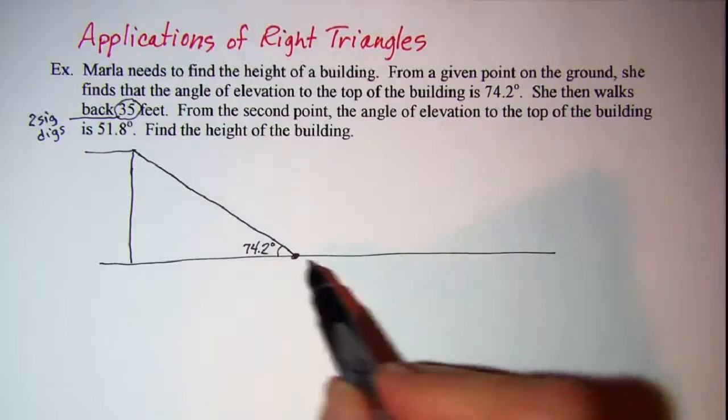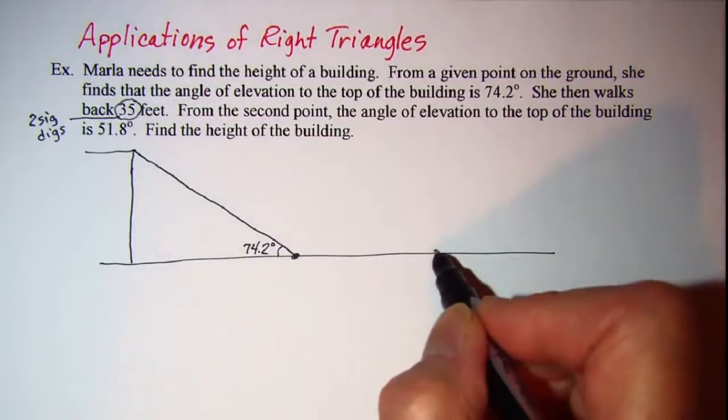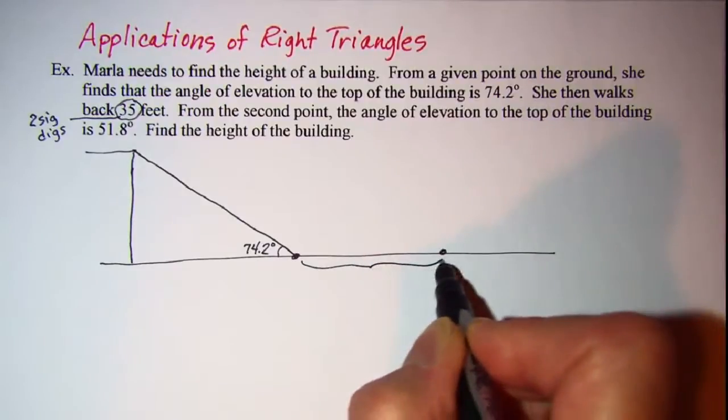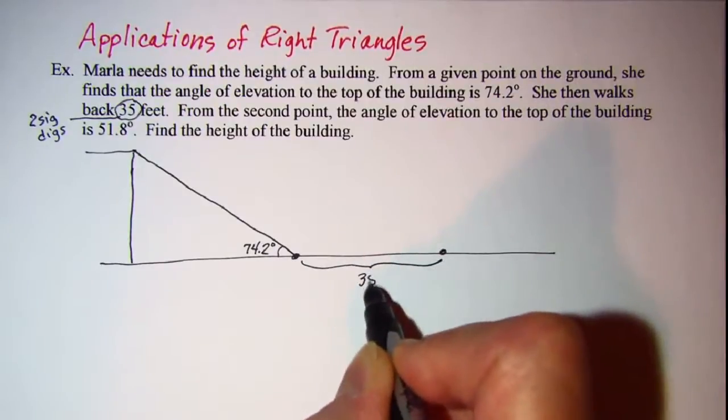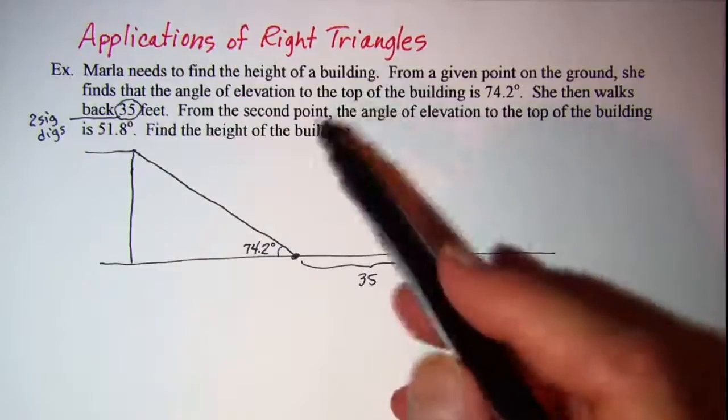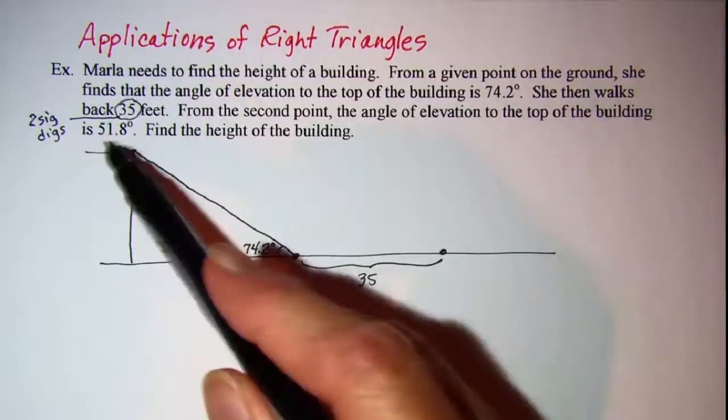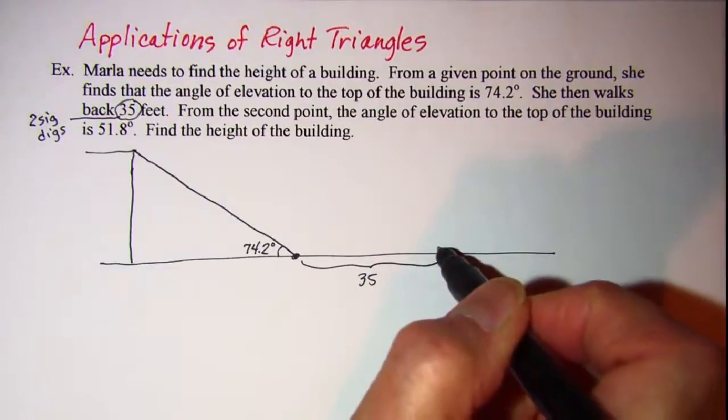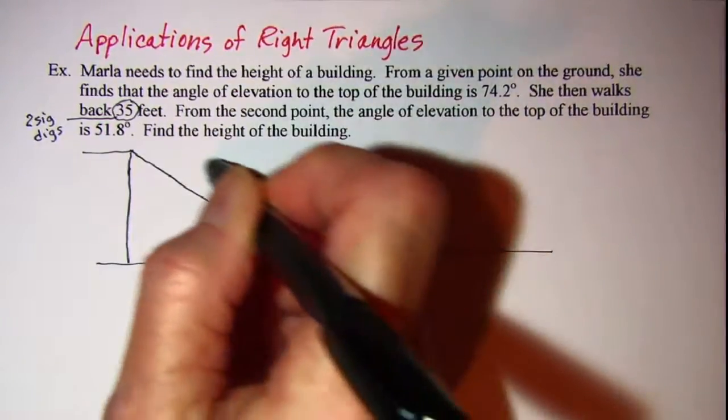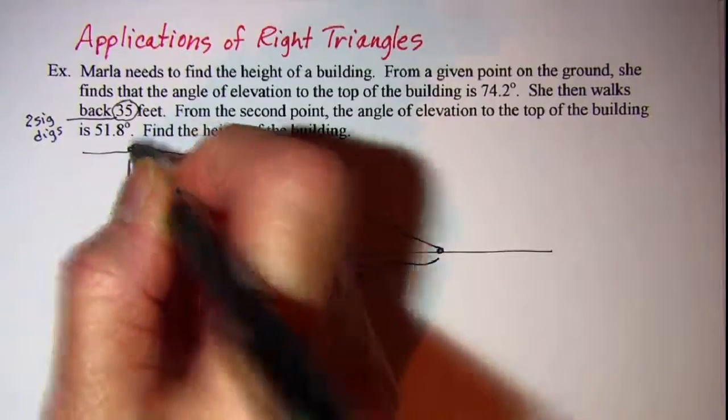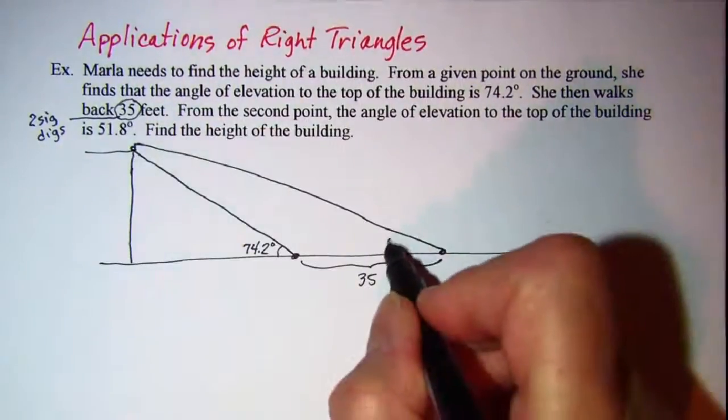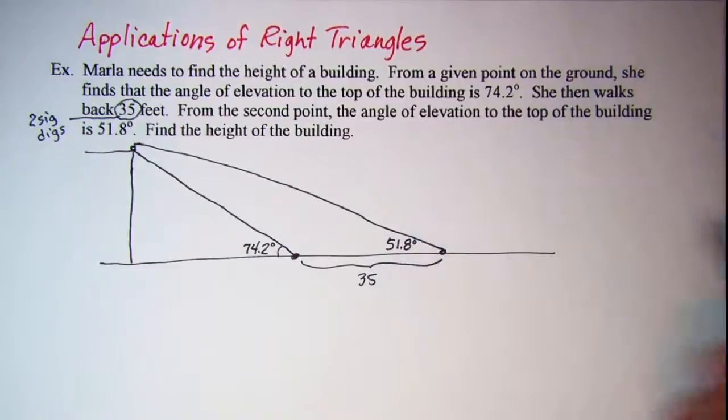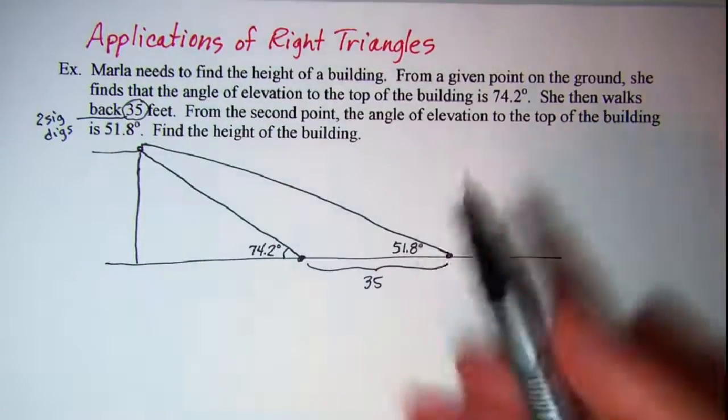She then walks back 35 feet and from the second point, the angle of elevation to the top of the building is 51.8 degrees. Find the height of the building.